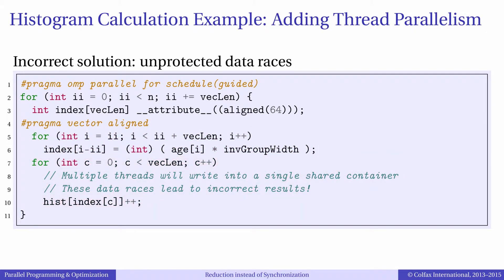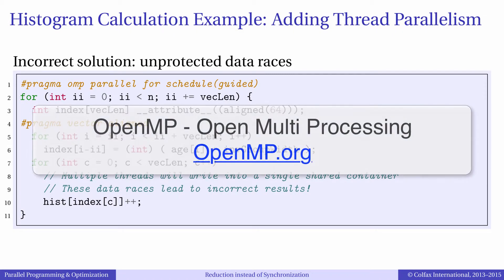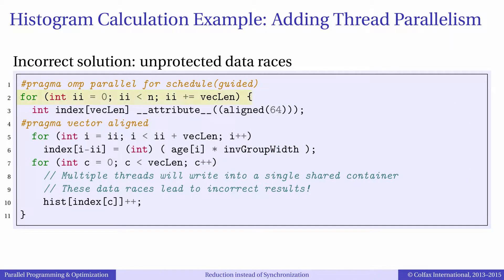Now our task is to parallelize this calculation across multiple threads, which will give us access to multi-core and many-core parallelism. We will do this using the parallel framework OpenMP, which we discussed earlier in this course. We can begin by parallelizing the outer loop across multiple threads. To do this we insert the statement pragma omp parallel for before the loop — ignore the scheduling clause for the moment.